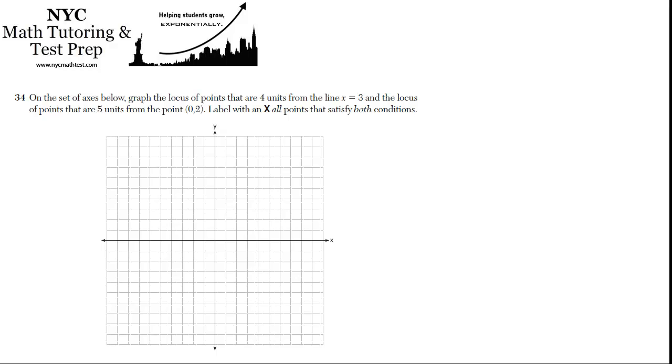Problem 34. On the set of axes below, graph the locus of points, which just means the set of points, that are 4 units from the line x equals 3, and the locus of points that are 5 units from the point (0, 2). Label with an x all points that satisfy both conditions.